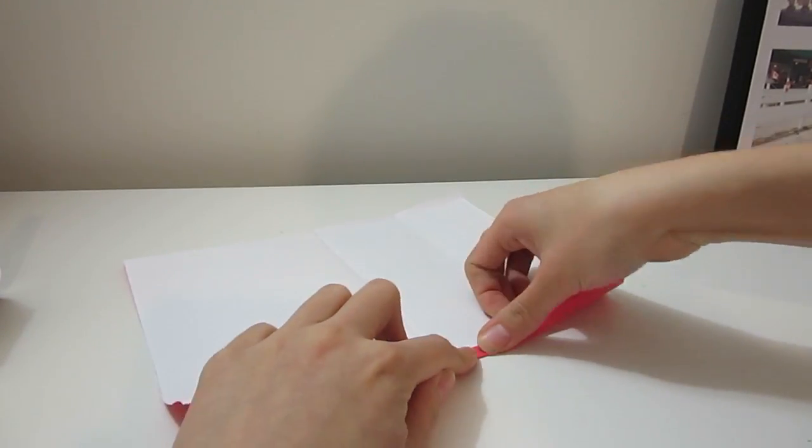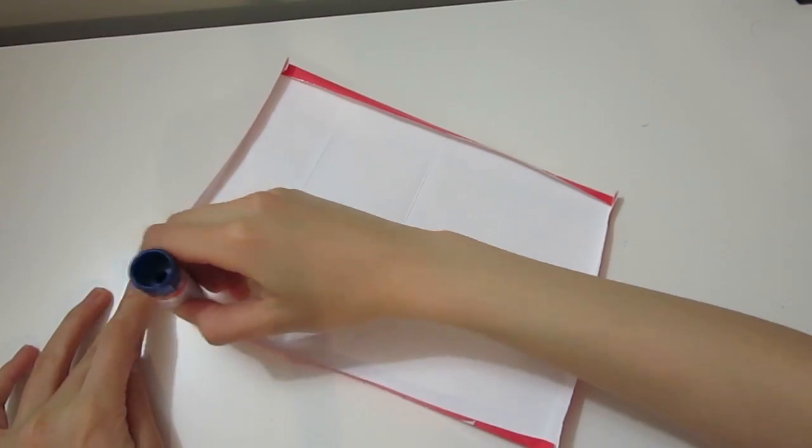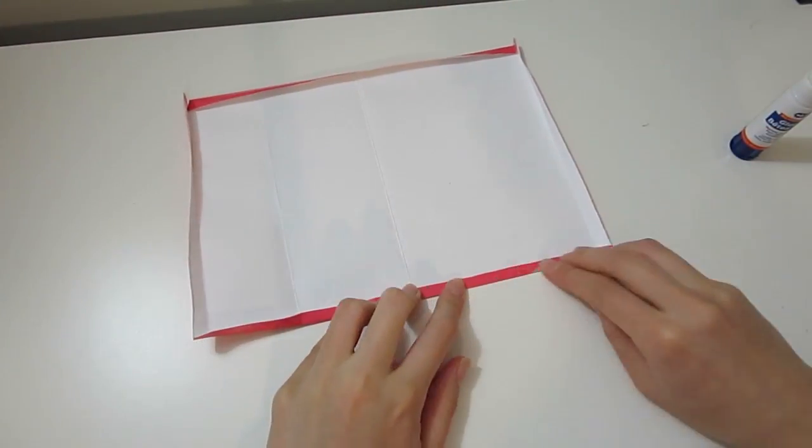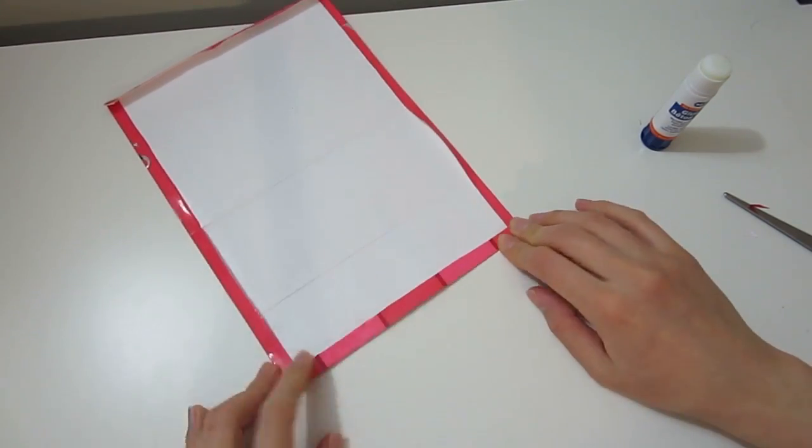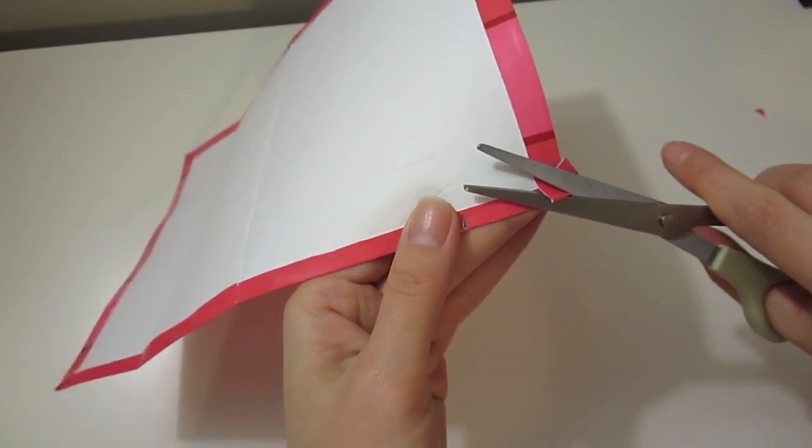Once you have the right size, fold it about a quarter inch on all four sides and glue it down to get a polished edge. Cut off the overlapping section at the four corners to keep everything flat.